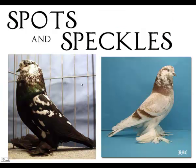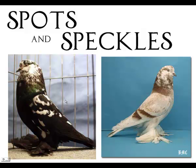Spots and speckles. Now this bird is a model, and this is a grizzle. They're very different. A grizzle bird has a colored feather with white flecks on each barbule, which are the strands of the feather. And this model bird is a colored bird with white feathers mixed in between. There's another spotted bird called Splash — Splash is like a model, but it's a white bird with colored feathers.